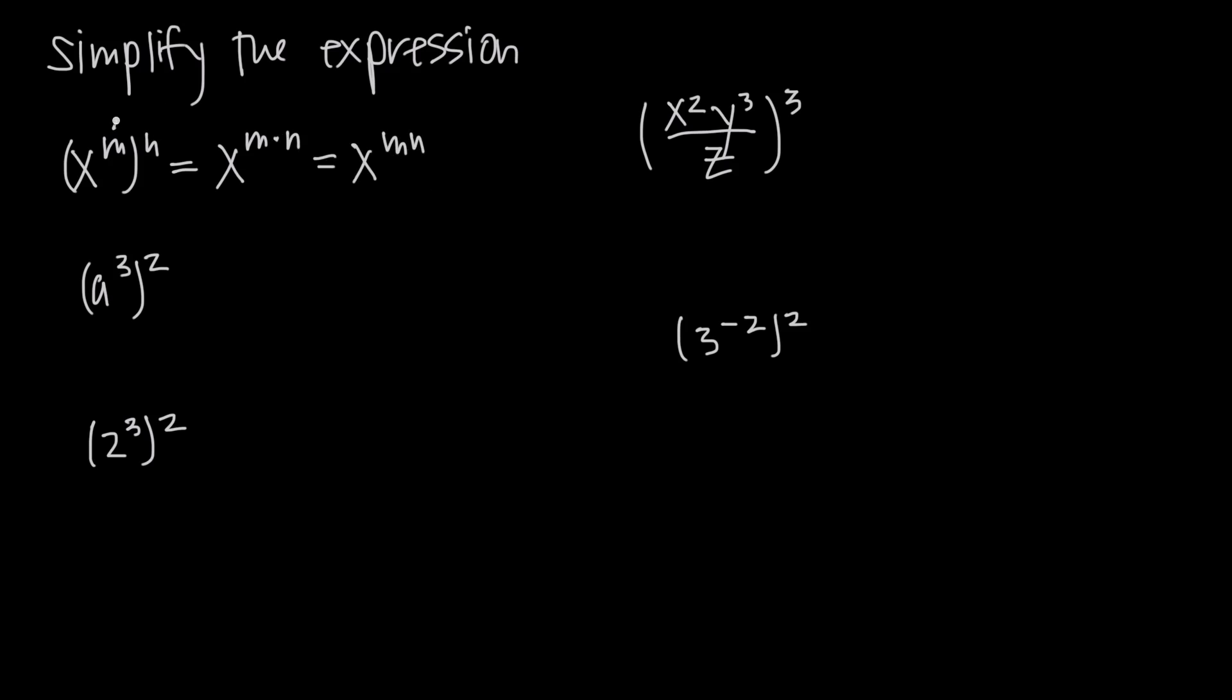In other words, we just multiplied these two exponents together and kept the base the same. So what happens when our exponents are real numbers? Well, it's the same thing. Our base is a, so we start out with a, and then we multiply our exponents together, 3 times 2. 3 times 2 is 6, so our answer is a to the 6th power.